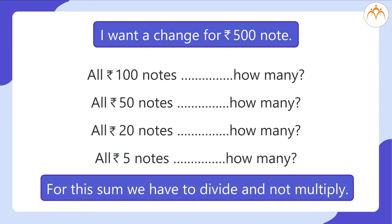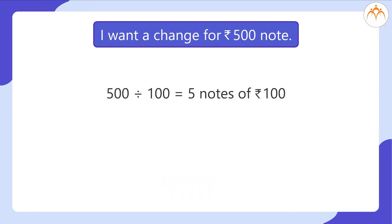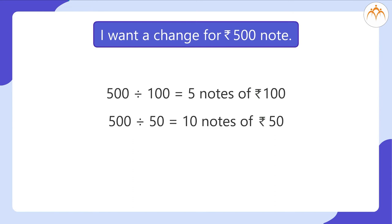For this sum we have to divide and not multiply. So: 500 divided by 100 is equal to 5 notes of rupees 100. 500 divided by 50 is equal to 10 notes of rupees 50. And 500 divided by 20 is equal to 25 notes of rupees 20.